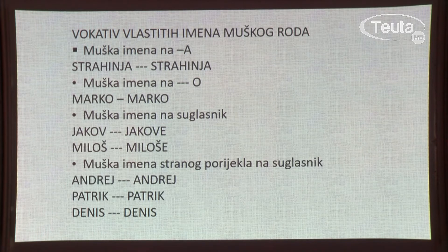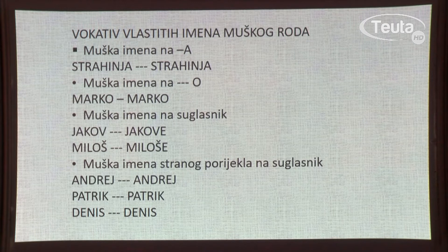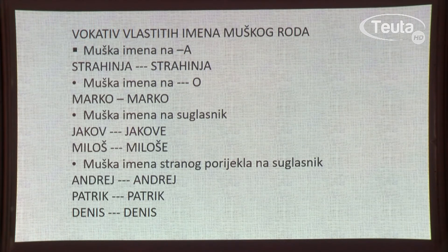Kod imenica vlastitih imena muškog roda — muška imena koja se završavaju u nominativu na A, kao Strahinja, u vokativu zadržavaju isti oblik: hej, Strahinja. Muška imena na O, kao što je Marko, u vokativu glasi: hej, Marko. Muška imena na suglasnik: Jakov — Jakove, Miloš — Miloše. Muška imena stranog porijekla na suglasnik: Andrej, Patrik, Denis — zadržavaju svoj oblik: hej, Andrej; hej, Patrik; hej, Denis.